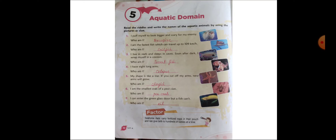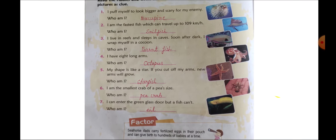So you have to draw one of the aquatic animals. As you can see, there are several animals like porcupine, sailfish, parrotfish, octopus, starfish, pea crab, and eel.